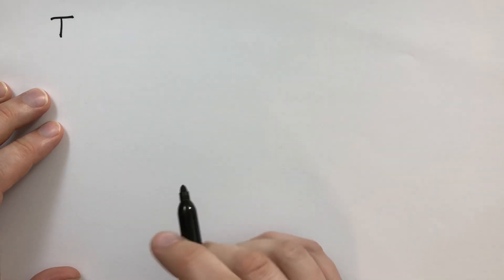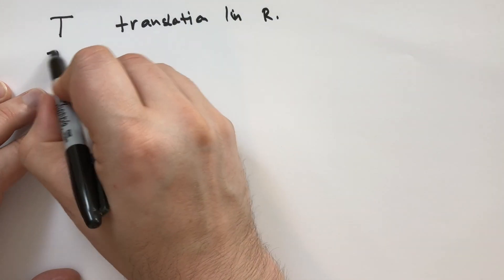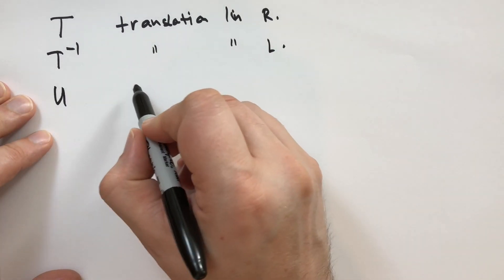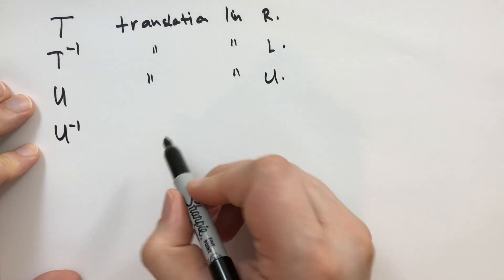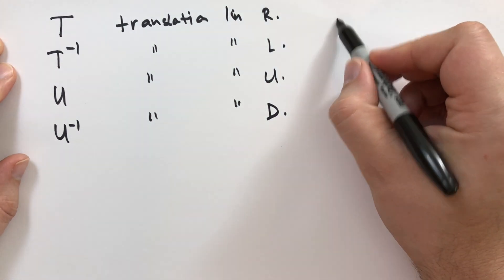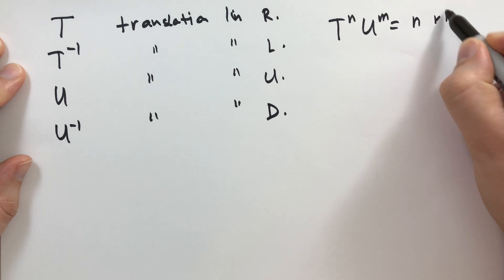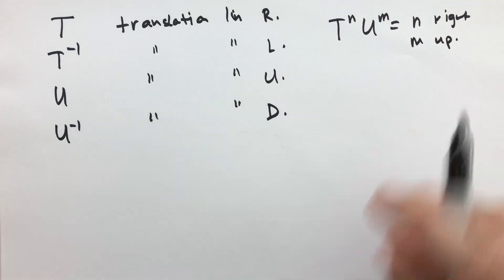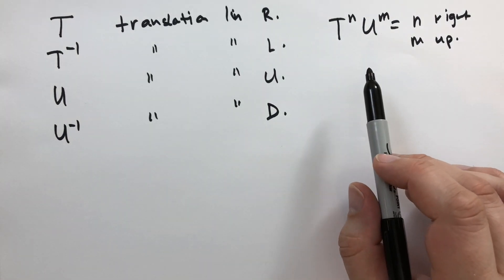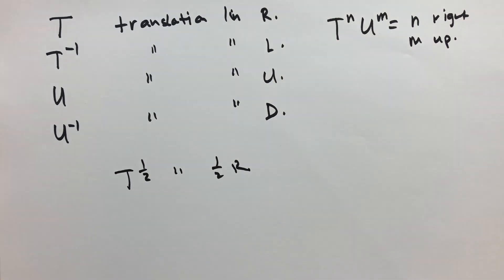Here's an example: let T be the translation one inch to the right, so T^(-1) is one inch to the left. Let U be a translation one inch up, so U^(-1) is one inch down. We can describe any lattice translation using T^N ∘ U^M, which is N inches right and M inches up, where N and M can be positive or negative integers. We haven't done fractional powers — T^(1/2) might suggest half an inch right for translations, but it won't generalize to things like half a reflection.